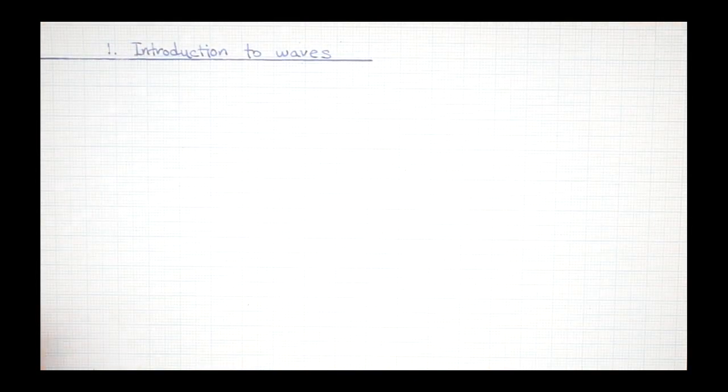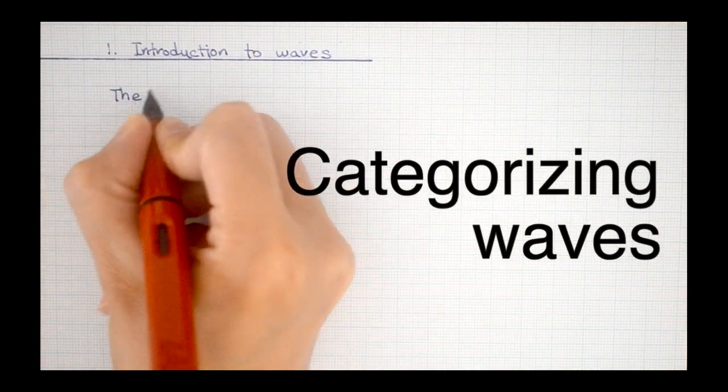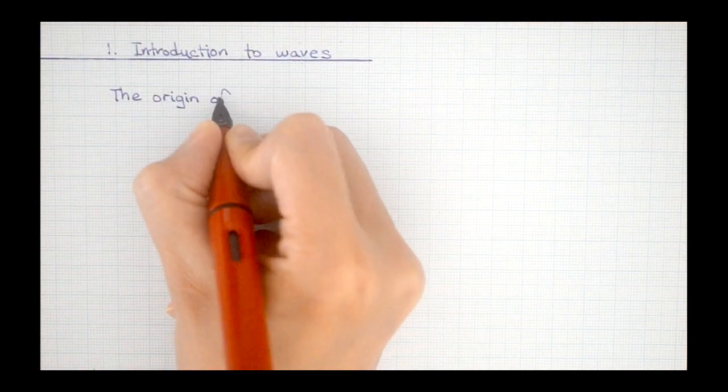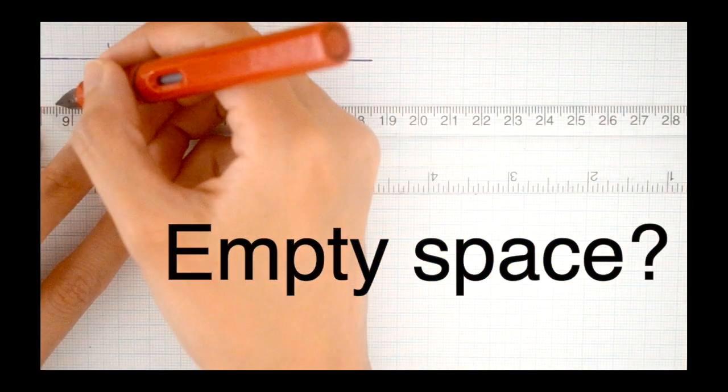There are different methods of categorizing waves. One way is to base it on how the wave is generated, whether it requires a medium to travel through or not. In other words, can it travel through empty space?